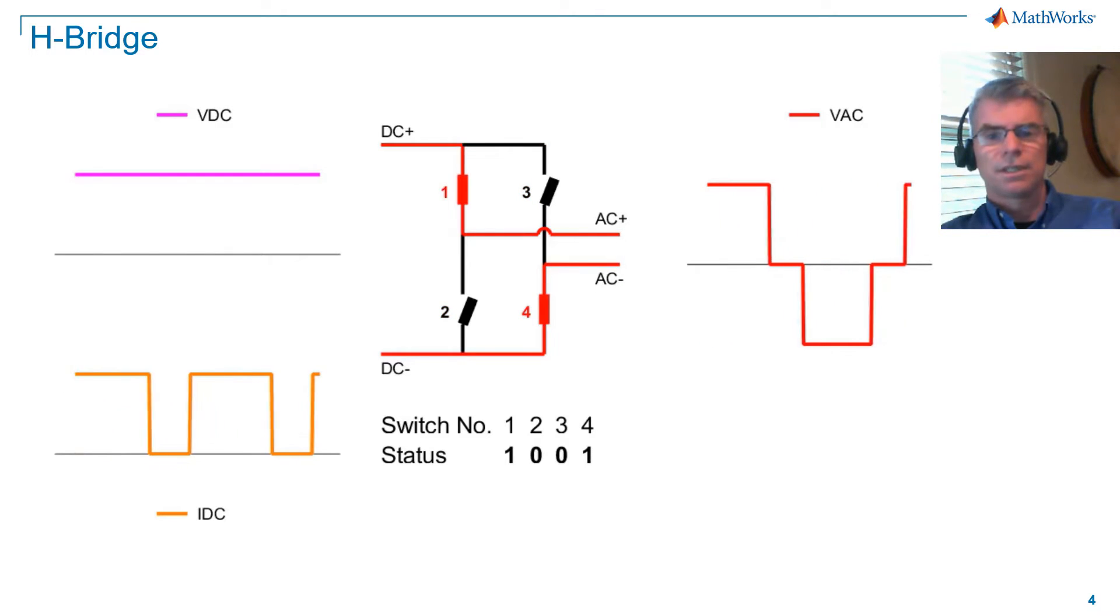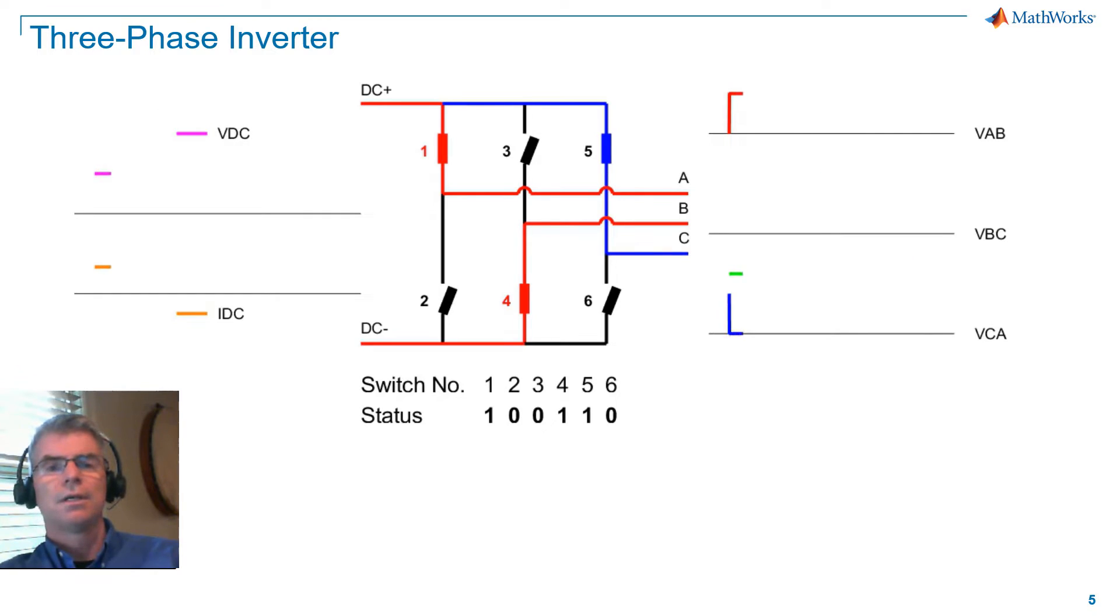Next, we'll consider this switching sequence for a three-phase inverter. You can see that we are able to generate three line voltages that have the same shape as our H-bridge example, and that are phase shifted by 120 degrees as required.